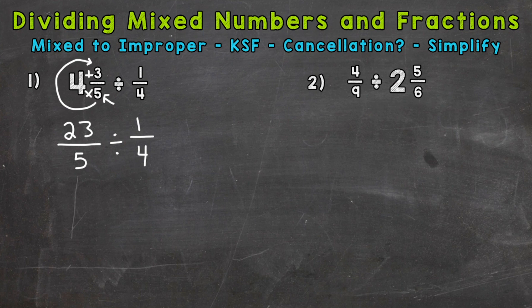We always keep our first fraction. We're going to rewrite the problem again with these steps. So keep, switch to multiplication, the opposite of division. And since we switched to multiplication, we need to flip the second fraction. So flip, the four is going to be the numerator and the one is going to be the denominator.